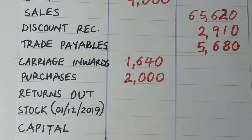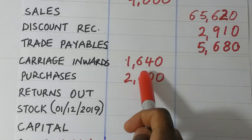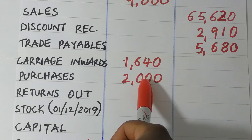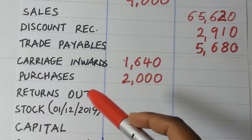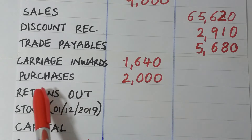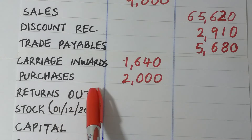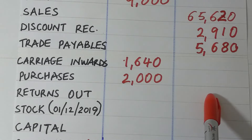Then we have returns outwards, which is the same as purchase returns. Returns outwards means you bought goods from your suppliers and are returning them. It is the reverse of purchases — when you purchase, stock increases; when you make returns outwards, stock reduces. So if purchases have a debit balance, returns outwards will have a credit balance, and the figure is posted on the credit side.